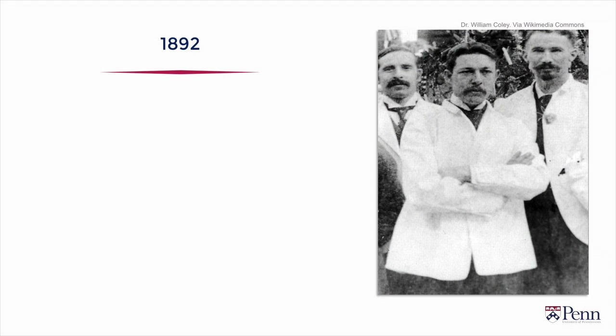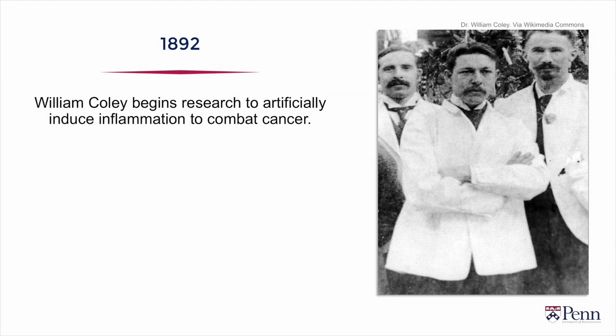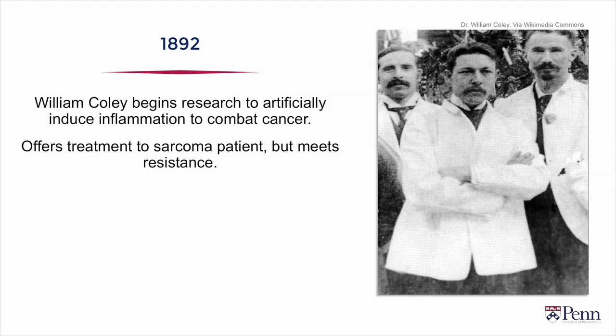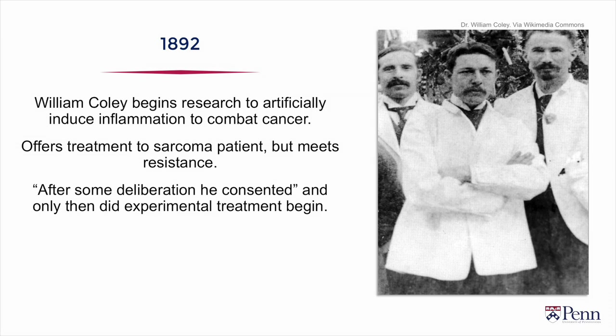But the same ideas are circulating in clinical research. For example, in 1892, a surgeon named Coley had noted that inflammation sometimes reduced cancers. Coley was developing research to try to artificially induce inflammation to combat cancer. He describes one patient who had a large abdominal sarcoma, where he offered to do his injections and induce inflammation to combat the tumor — and the patient was initially resistant. He then states: after some deliberation, the patient consented and injections only then began. So even in the 1800s, this notion of getting consent before you can conduct research was common.